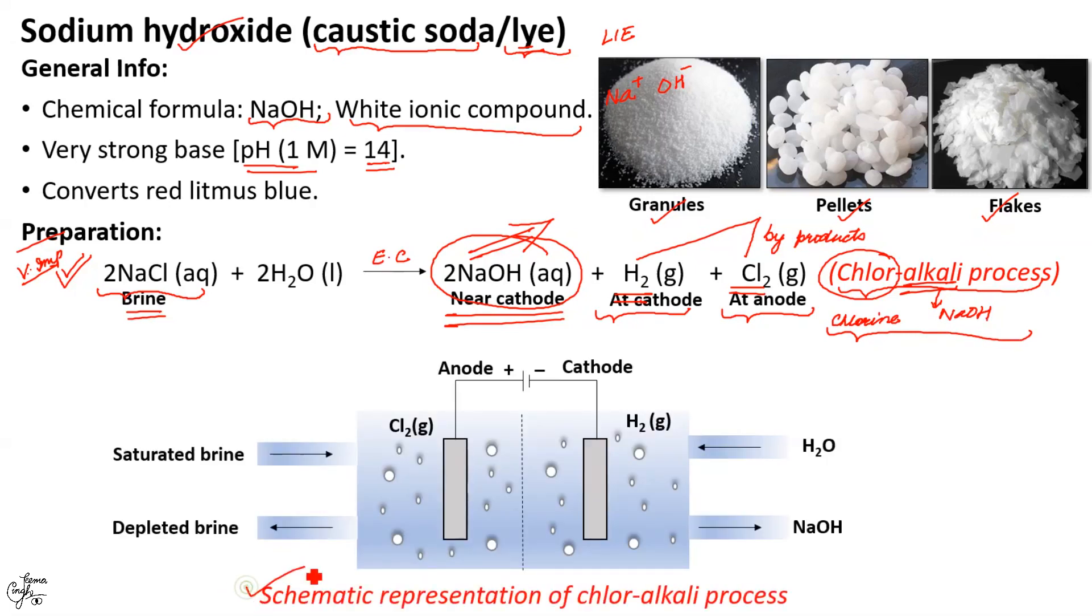This is the schematic representation of chlor-alkali process where saturated solution of brine along with water are fed into the cell. On passing electricity hydrogen is produced at the cathode whereas chlorine is released at the anode. Sodium hydroxide is produced near cathode as shown here.